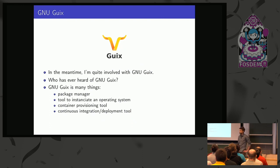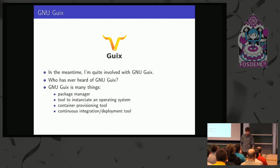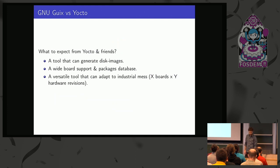In the meantime, I discovered GNU Guix. A few years ago I became quite involved with GNU Guix. GNU Guix is many things. It started as a very innovative package manager based on Nix, but now it's much more than that. It's a tool to instantiate an operating system called GNU Guix System. It's a container provisioning tool, a CI tool — yeah, it's a lot of things. And back to Yocto.